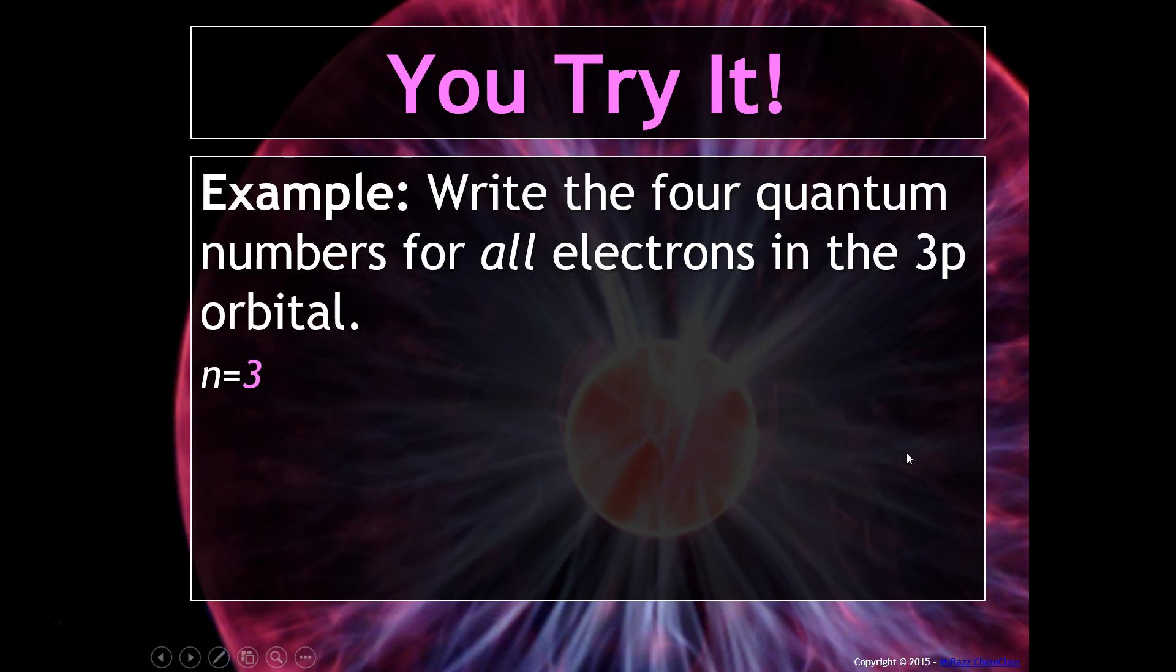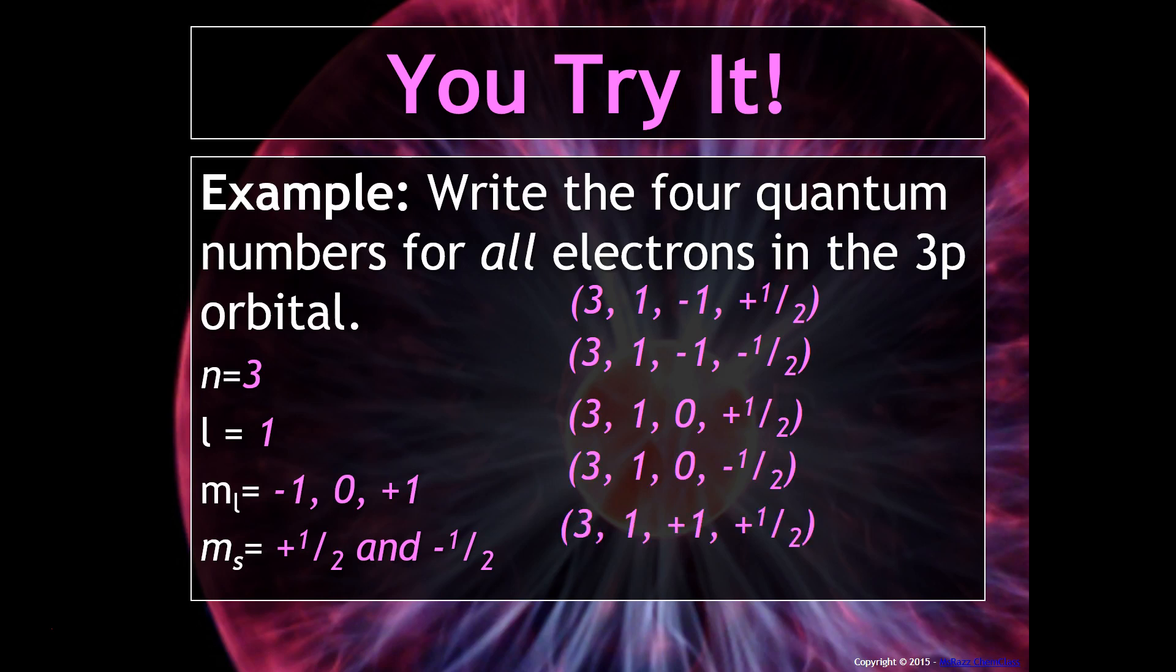So for example, these are what we talked about. And then M sub S has to be either these two. So if you look at this, these should be the different quantum numbers that you got. For example, this one would correspond to the first orientation in three-dimensional space for the 3P orbital. This would correspond to the second, and then this would correspond to the third. So these two quantum numbers are going to be the same for all of these, but these will be different.